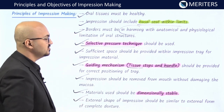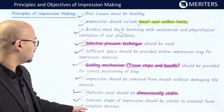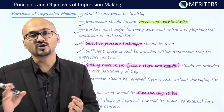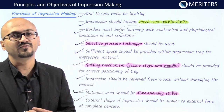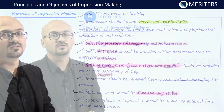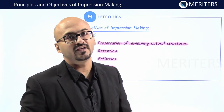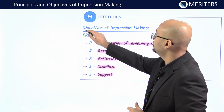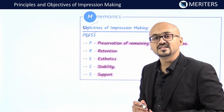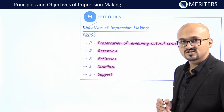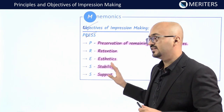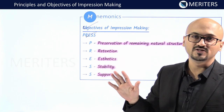The external shape of the impression should be similar to the external form of the complete denture — the shape of the impression should be a replica of how your complete denture surface is going to be. Those are the principles of impression making. The objectives of impression making can be remembered by the mnemonic PRESS: P stands for Preservation of remaining natural structures, R for Retention, E for Aesthetics, S for Stability, and the other S for Support. There are five objectives of impression making.